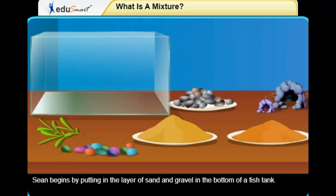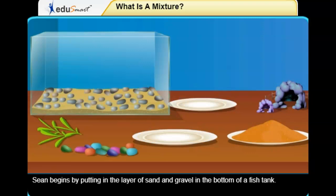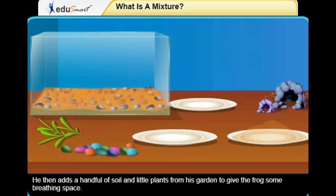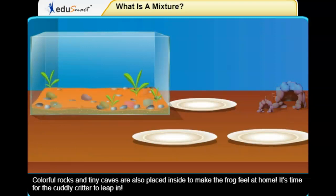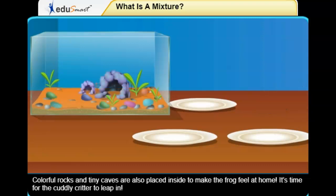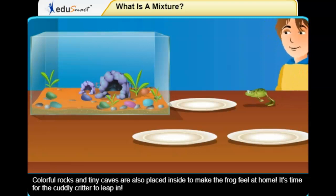Sean begins by putting in a layer of sand and gravel in the bottom of a fish tank. He then adds a handful of soil and little plants from his garden to give the frog some breathing space. Colorful rocks and tiny caves are also placed inside to make the frog feel at home. It's time for the cuddly critter to leap in.